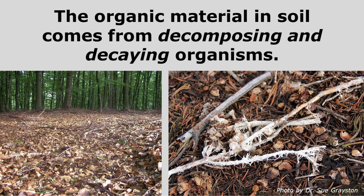When we talk about organic materials, we're talking about materials that came from living things. The organic material in soil comes from decomposing and decaying organisms. When plants and animals die, they're broken down and become a part of the soil, and those nutrients are absorbed and used by living plants to grow.